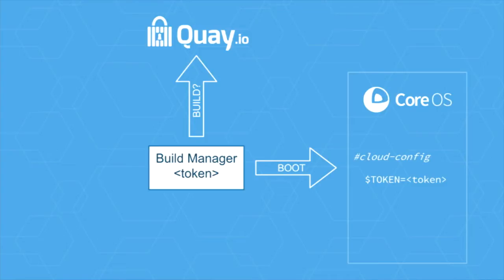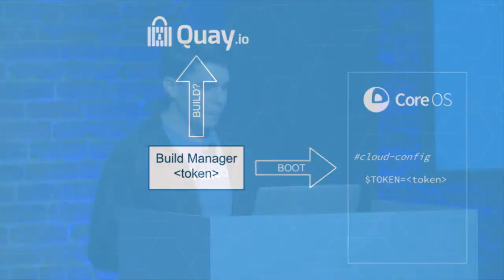Basically, this is two steps the build manager is performing. First, the build manager asks Quay: do you have a new build for me? And Quay may say no, come back later — or it may say yes, here's a definition of a build that I think you should go do.